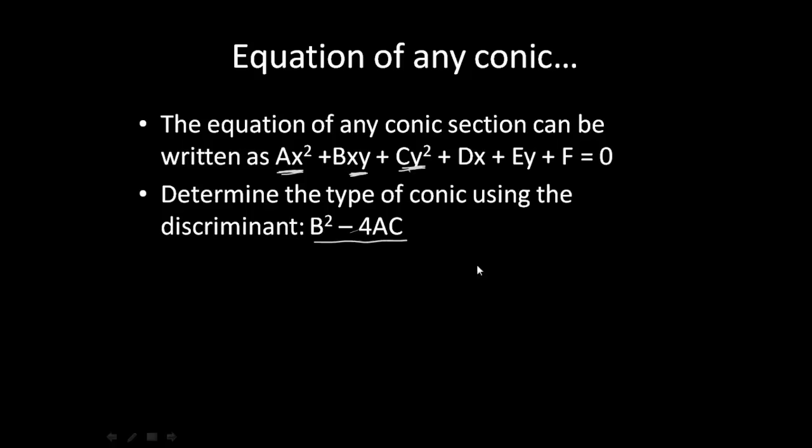Now, our rules for our discriminant. If our discriminant is less than zero, meaning it's negative, and b is equal to zero and a is equal to c, we have a circle. So all three of these conditions have to be met in order to be a circle.